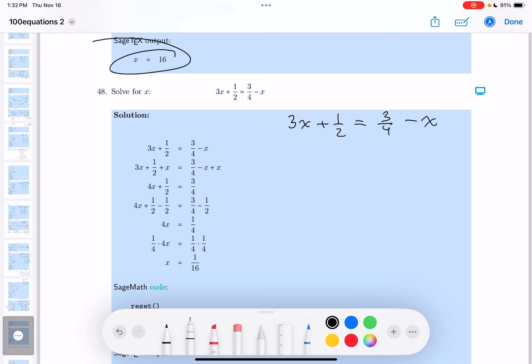I'm going to try to avoid multiplying both sides by the LCD. I'm going to just add x to both sides. That's relatively simple to do. And I'm going to subtract the 1/2 from both sides.